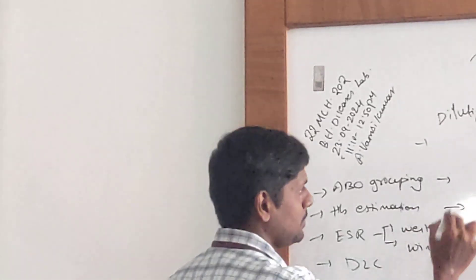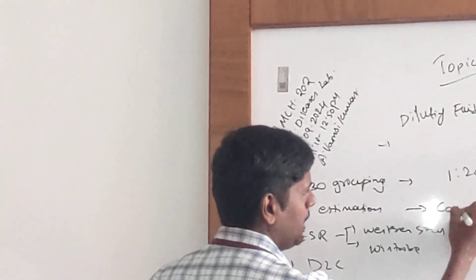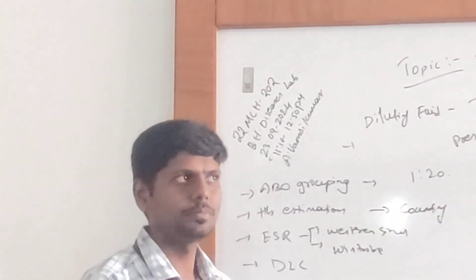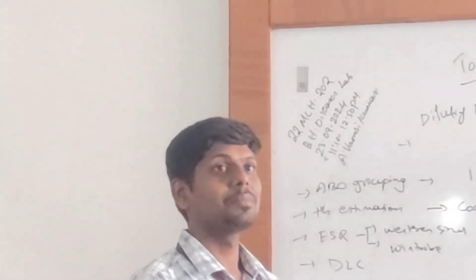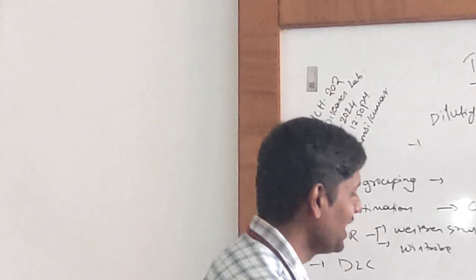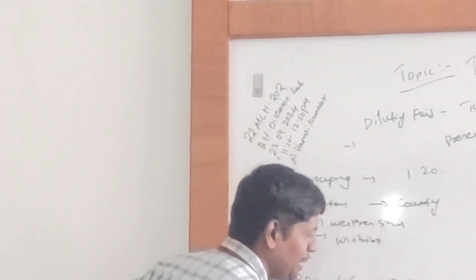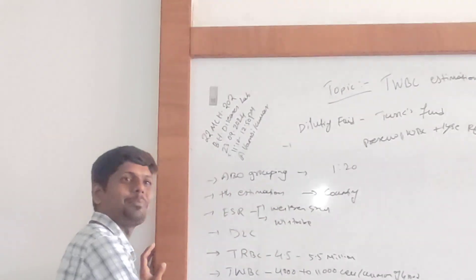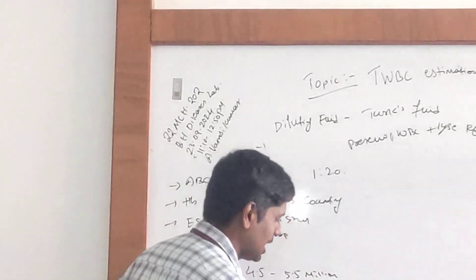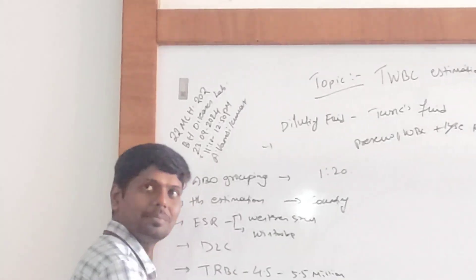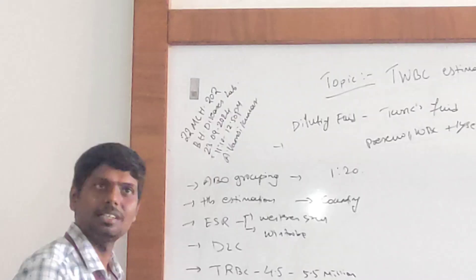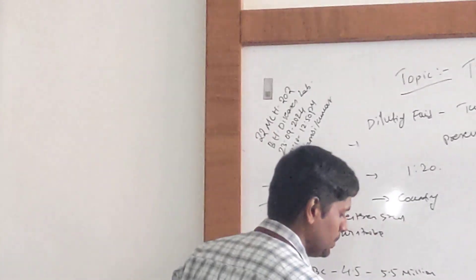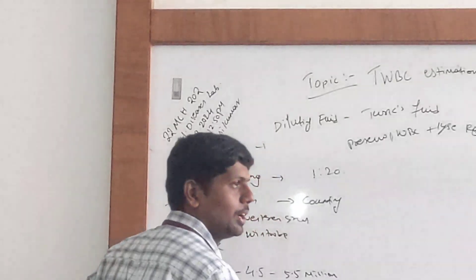Next: counting area. Where will we count the WBC? Quick review of the Neubauer chamber: how many large squares are present? 9 large squares. WBC are counted in 4 large corner squares. Each large square is 4×4. Very good.